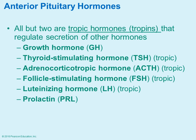The six anterior pituitary hormones are mostly part of a cascade or stepwise process — they become stimulated and in turn stimulate other hormones. Trophic hormones are those that regulate the secretion of other hormones, and four of the six anterior pituitary hormones fall into this category. The only two that are not trophic hormones are growth hormone and prolactin.